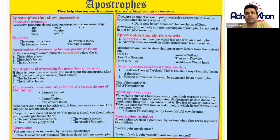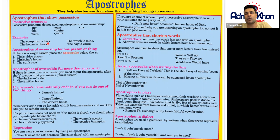First of all, possessive pronouns. Possessive pronouns do not need apostrophes to show ownership — such as my, his, hers, ours, theirs, yours, and its. They do not require an apostrophe. For example: the computer is hers, the house is theirs, the watch is mine, the bag is yours. No apostrophes are needed here.